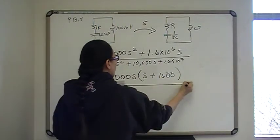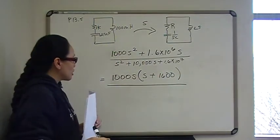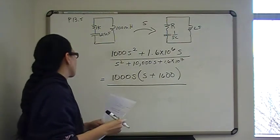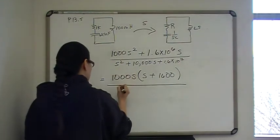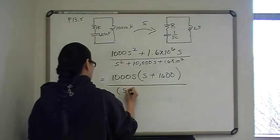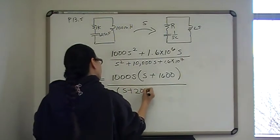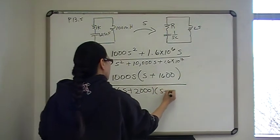So factoring out 1000S will give me S plus 1600. And then in the denominator, you should, if you're going to be an engineer, you need a calculator that can factor. So I use my calculator, and it says this factors out to be S plus 2000 and S plus 8000.